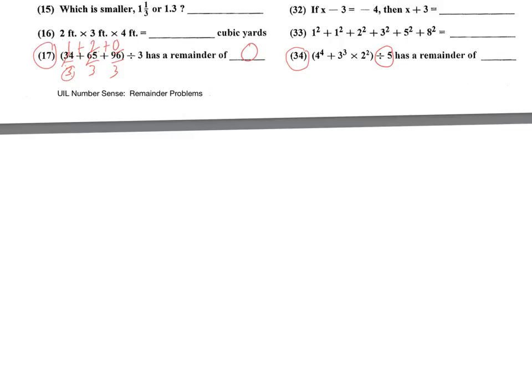2 squared is 4. Divided by 5 has a remainder of 4. 3 cubed is 27. Divided by 5 is a remainder of 2. We're going to multiply those two. So 2 times 4 is 8. And 8 divided by 5 is a remainder of 3. So we have a plus 3 here.